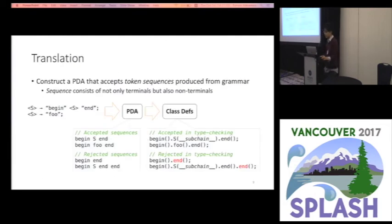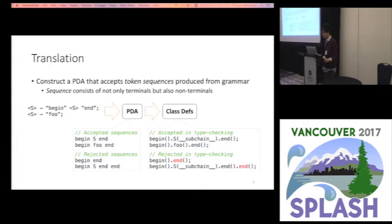From this slide, I will talk about translation methods from grammar to fluent API. The key idea to generate a fluent API with multiple style support is that the translation involves constructing a PDA — a pushdown automaton — that accepts token sequences produced from the input grammar. Here, the token sequence consists of not only terminals but also non-terminals.